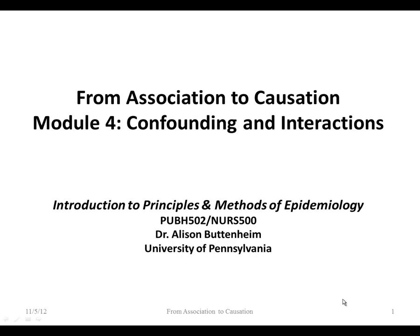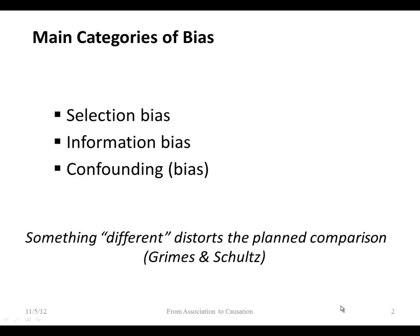This is the last module for week 8 — module 4 on confounding and interactions. Back again to our main categories of bias: we did selection bias, we did information bias, and in this module we're going to talk about confounding.